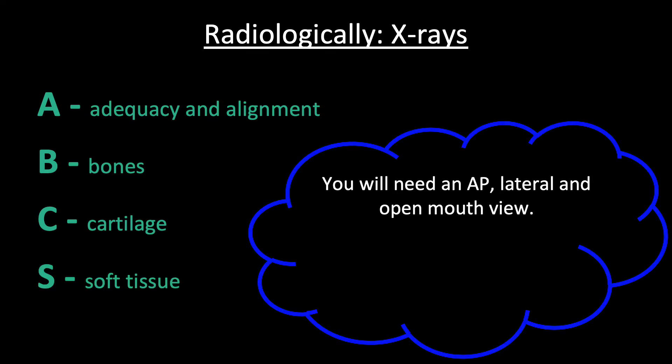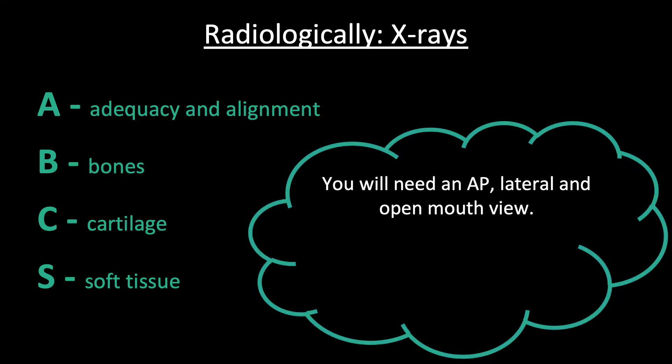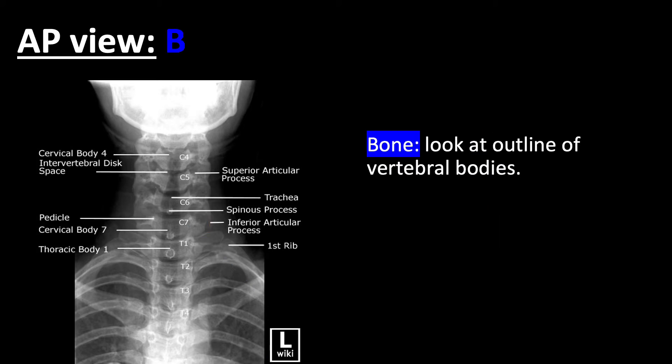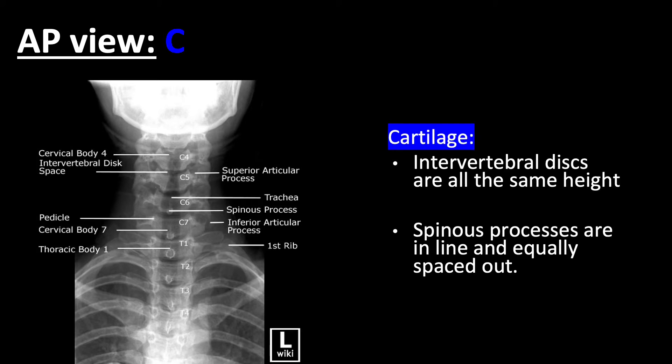The three views we will need are an antero-posterior, lateral, and open mouth view. The AP view is the least informative view, but still necessary. In terms of adequacy, we would want C1 to T1 visualization. In terms of alignment, we will want the lateral edges — the red lines of the C-spine — as well as the spinous processes to be in line. For bone, we would trace the cortical lines to see if we can see any compression or fractures. For cartilage, the intervertebral discs must be the same height, and the spinous processes must be in line and equally spaced out.